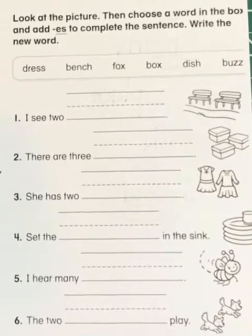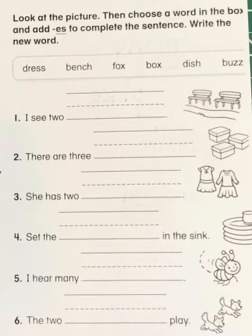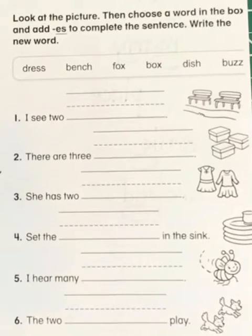We've been working on making words mean more than one, and usually we just add an S to words to make it mean more than one. But if a word ends with an S, a Z, an X, the SH digraph, or the CH digraph, we don't just add S — we add ES to show that there are more than one.